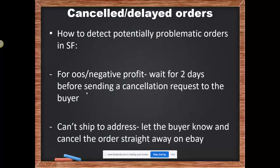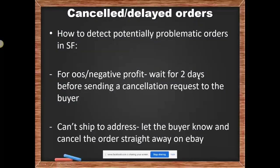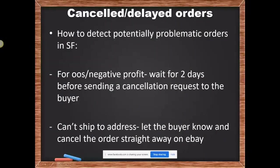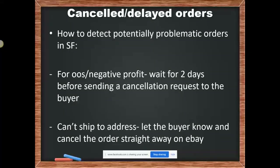So what do I do with Purchase Issues? If I encounter an out-of-stock order or a negative profit situation, I usually wait two days. Why? Because I'm trying to give them a chance to get back in stock, or maybe the price will go back down. Amazon is a very dynamic supplier — items are constantly going in and out of stock, and prices are changing sometimes by the minute or hour. So they could go back to where they were.